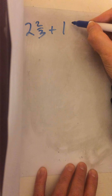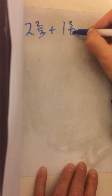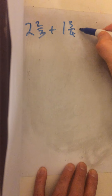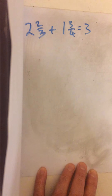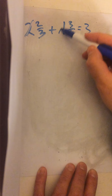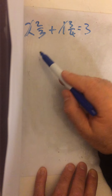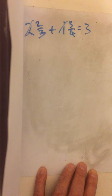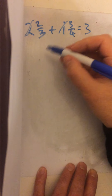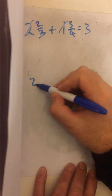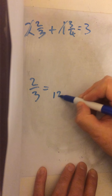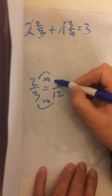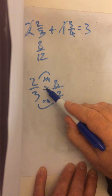Let's start off with adding. We've got two and two-thirds plus one and three-quarters. When you're adding, you can add up the whole numbers first — you can only do that when adding. Now we need to put the fractions into a common denominator. The lowest common multiple of three and four is twelve, so we're going to turn these into twelfths. Two-thirds equals how many twelfths?